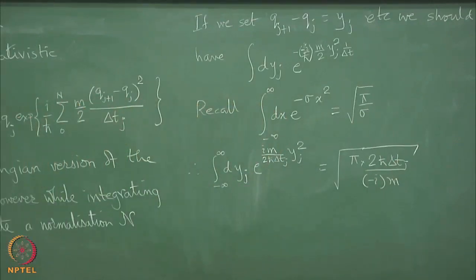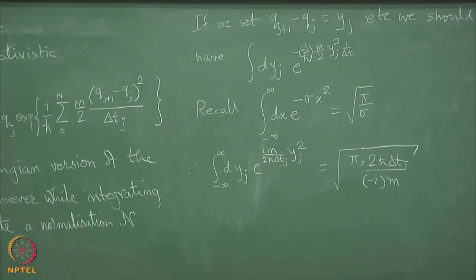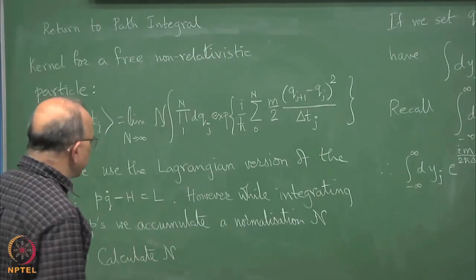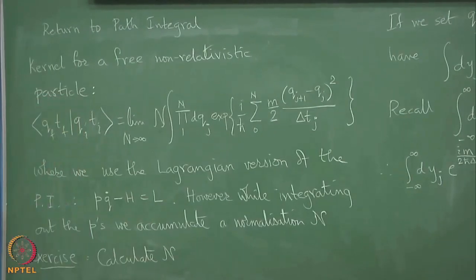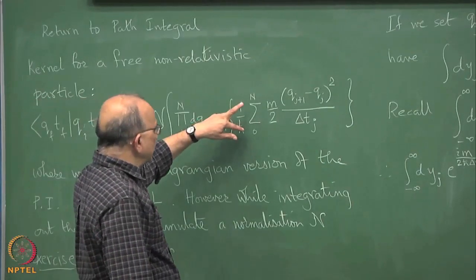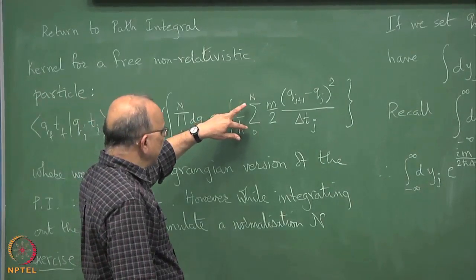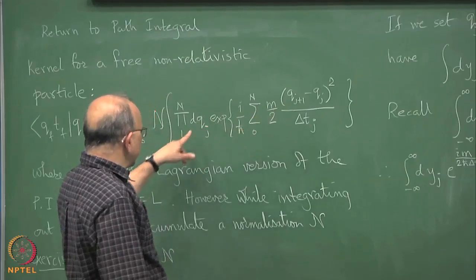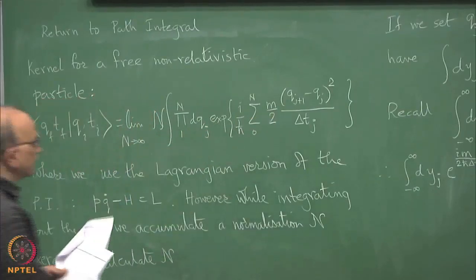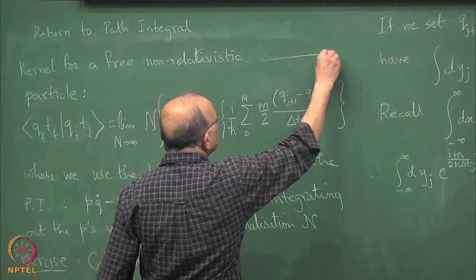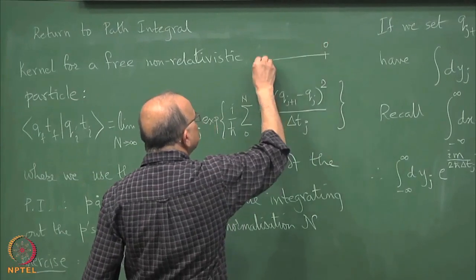So we go here and do this, but there is one minor technical problem which turns out later to be interesting. It is that the number of differences is one larger than the number of integration variables, because you have from 0 to n.